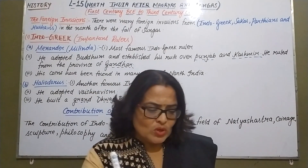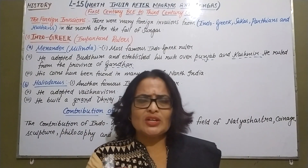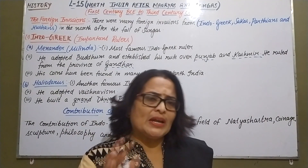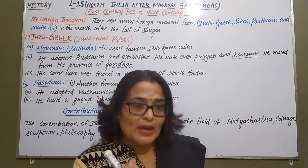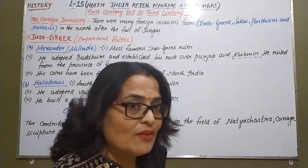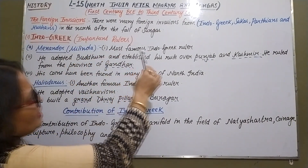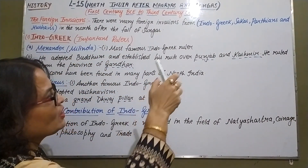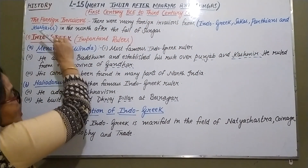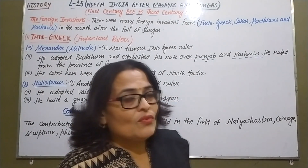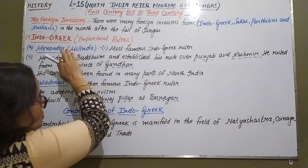After the Sunga and Kanwa dynasties, the whole empire was divided into many small independent kingdoms. At that time, foreign invaders came. The main foreign invaders were the Indo-Greeks, Sakas, Parthians, and Kushans. In lesson number 15, part 1, we are going to study about these four groups.